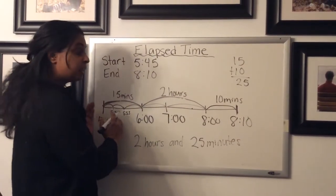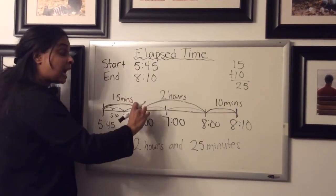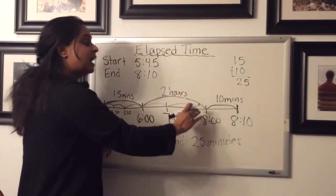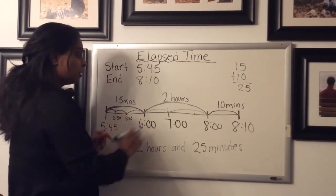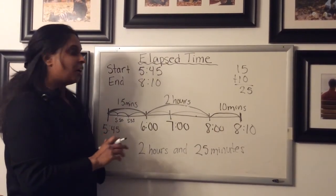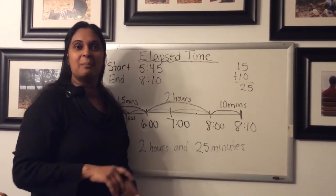So that is how you would use a timeline to calculate elapsed time. Put your start time at the beginning, your end time at the end, get to your nearest hour first, go up as many hours as you can without going over the end time and then just count the extra and put all your minutes together and then write down your hours and then you should have your elapsed time. So using a timeline today to calculate elapsed time. Have fun, everyone.